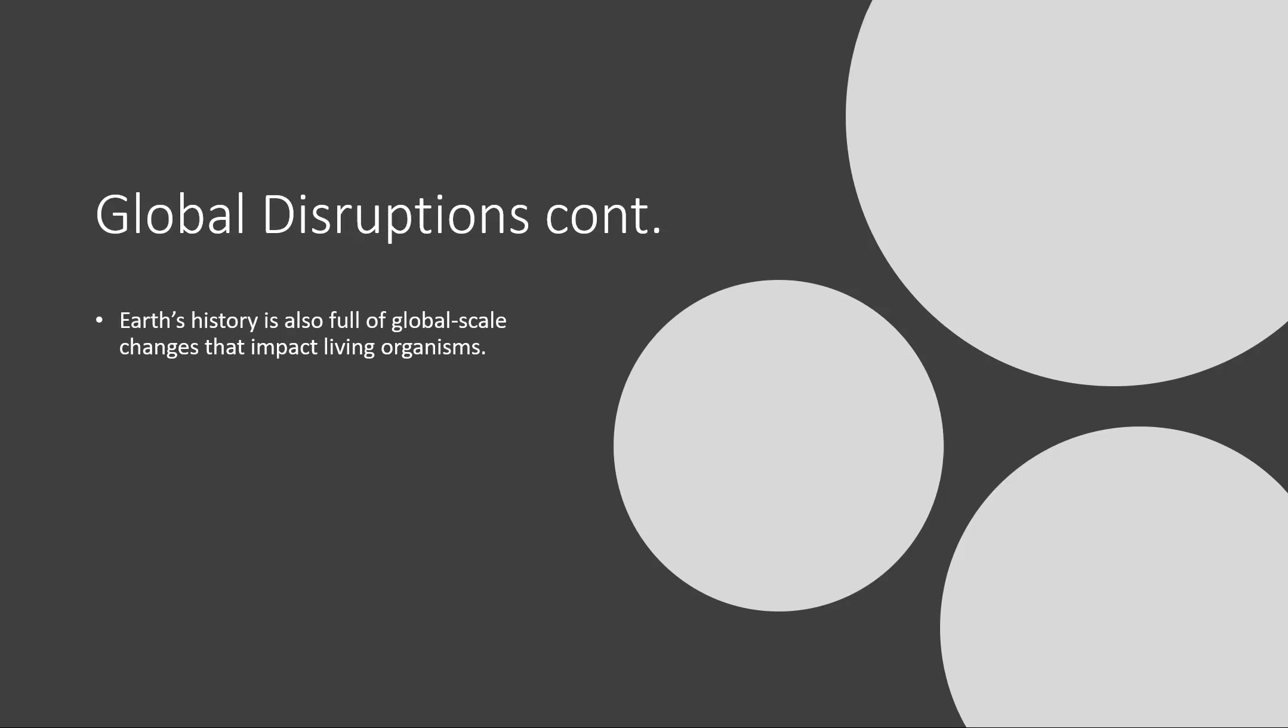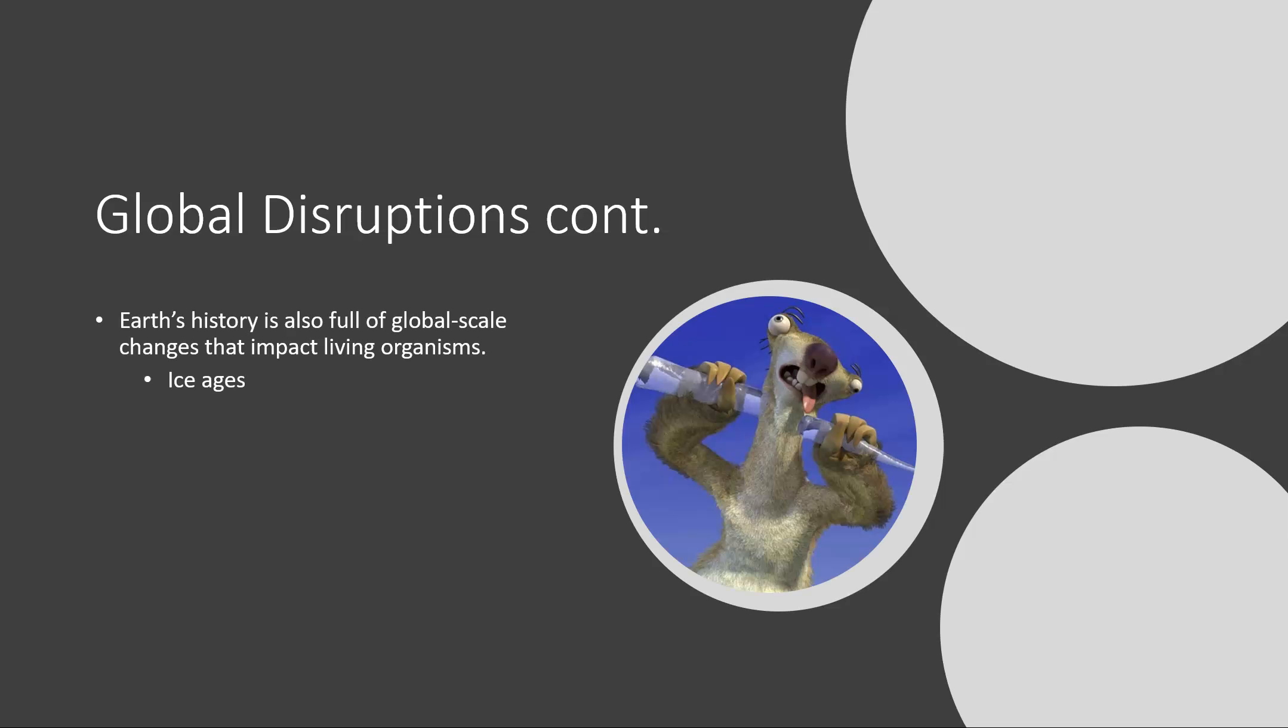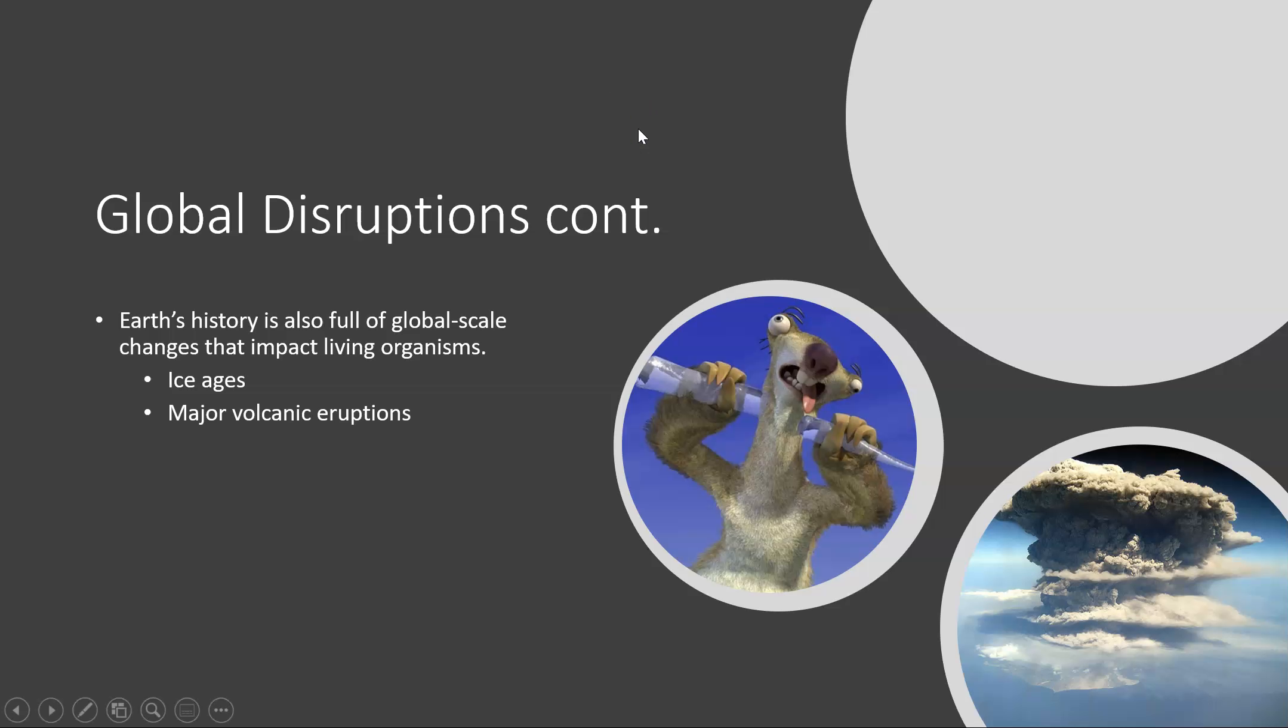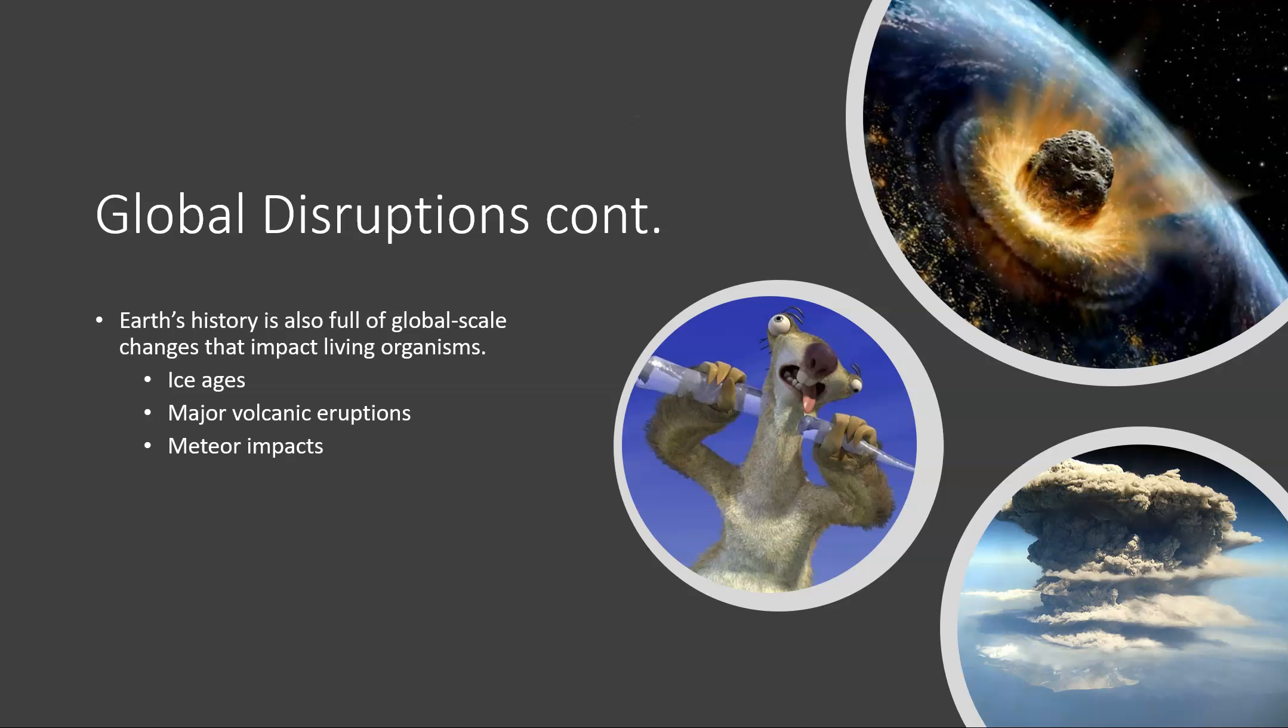But some disruptions are truly global. Ice ages impact the entire global climate. Major volcanic eruptions, the types that occur maybe every few hundred thousand years, can actually put enough particles in the air to cause little mini ice ages. And God forbid, but they do happen, major meteor impacts. Those are huge changes to the entire global system that can have impacts on all living organisms on the planet.